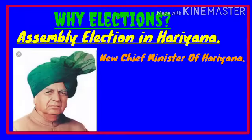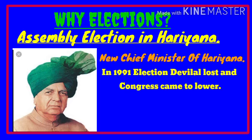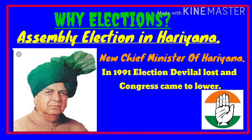The promise was kept. Because the people had voted for him based on his promise, he did what he had promised and became Chief Minister of Haryana. But in politics, nothing is permanent. For the next four years, Devi Lal and his party Lokdal ruled Haryana. However, in the 1991 election, Devi Lal lost, and the Congress party came to power again. This is the uncertainty in elections — first it was Congress, then Devi Lal, and now Congress returned to power. That is the story of Haryana.